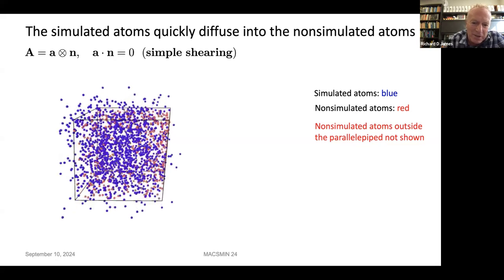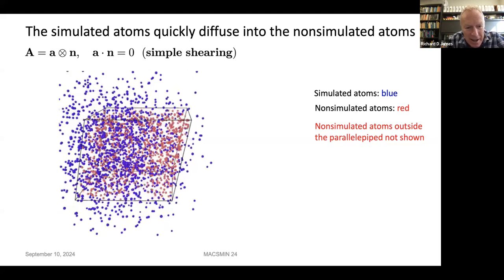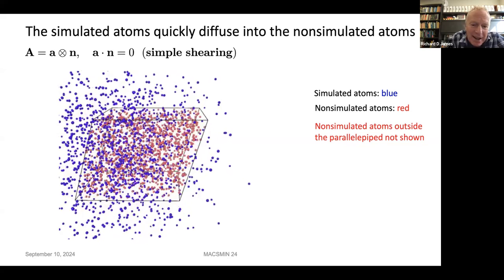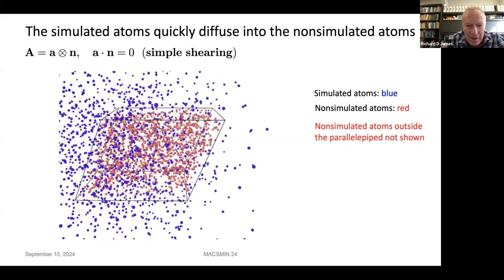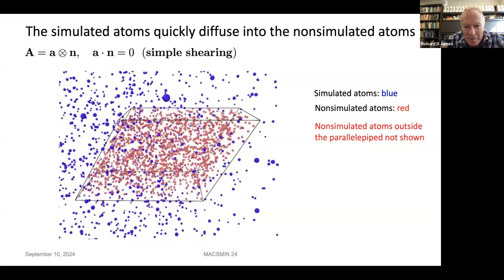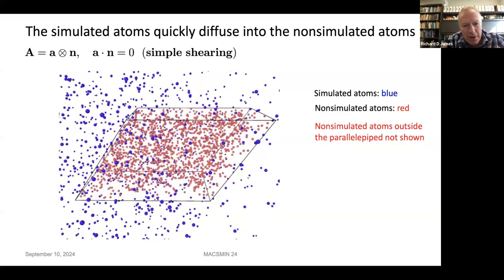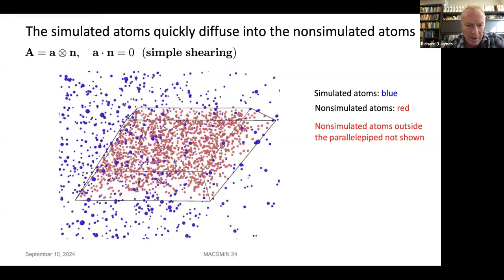Here's a typical simulation. What's interesting is that the simulated atoms quickly diffuse into the non-simulated atoms — the simulation is highly chaotic. Some atoms look bigger because they're closer to you. That's the typical situation when you don't have very well-organized initial conditions: it turns into a gas or liquid and the simulated atoms quickly diffuse into the non-simulated atoms.